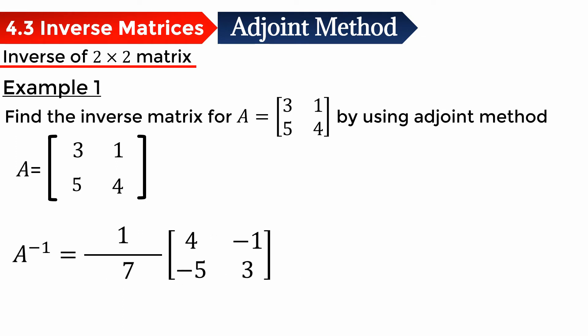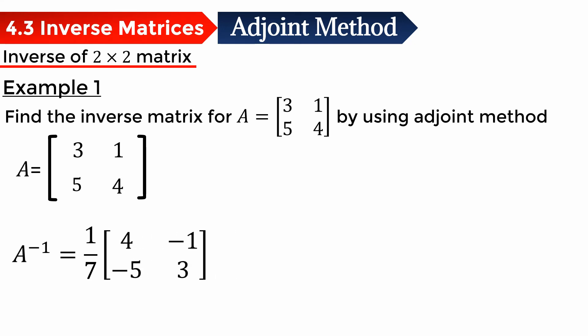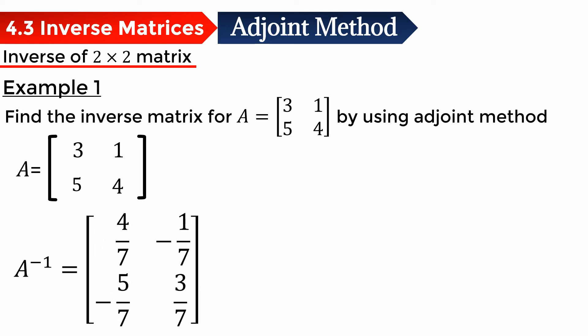For the inverse, we need to multiply the scalar into each element — we cannot leave the fraction outside the matrix. So we multiply every element by 1 over 7, or we just divide by 7. So this is the inverse for matrix A, and this is the answer.